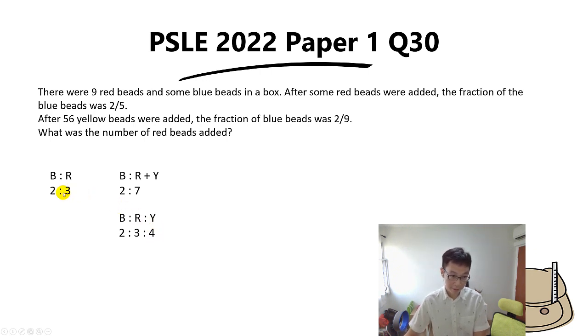Before that, I forgot to mention you must also make sure the blue doesn't change. Remember, throughout the whole question the blue beads don't change, so you've got to make sure the blue ratio is always 2, 2, and 2. After you've got this ratio, the rest will be very straightforward because 56 yellow beads are added, so 4 units will equal 56.